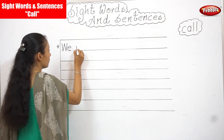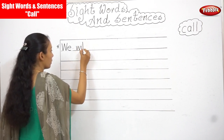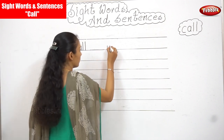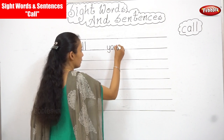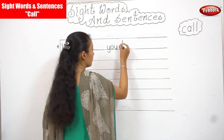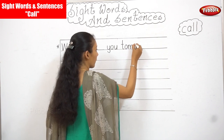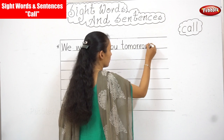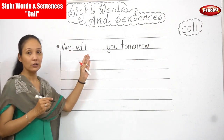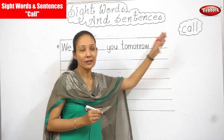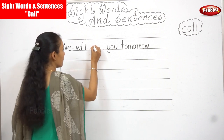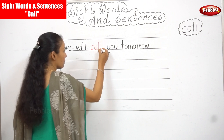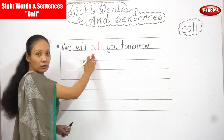We will — flash — you tomorrow. The sentence has a dash here. We need to add in the word 'call' here. Let's read the sentence. What's the sentence? We will call you tomorrow.